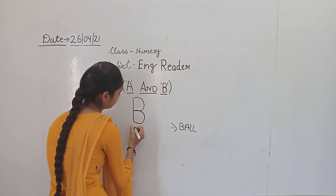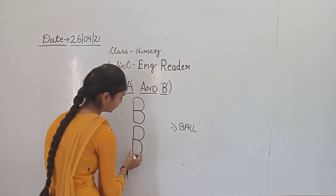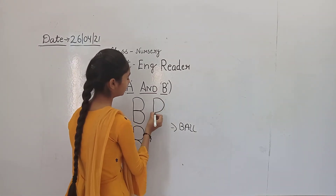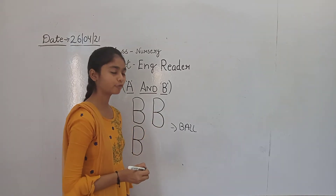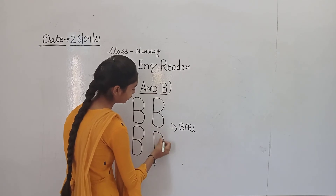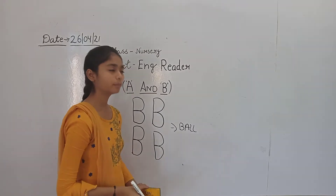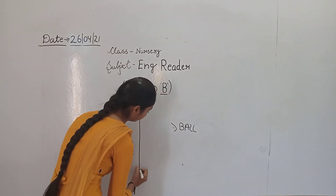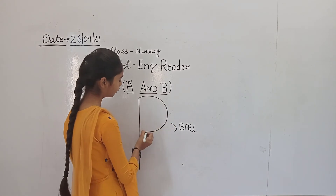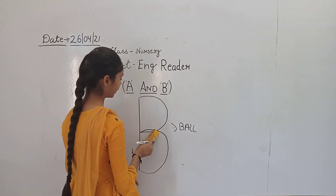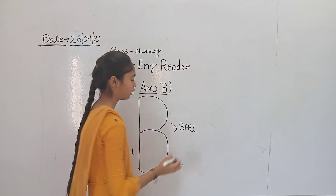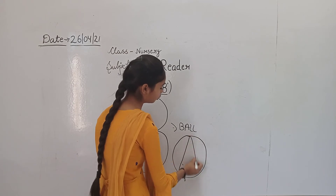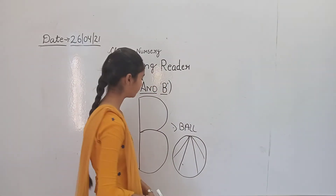Standing line, curve, again curve. B for ball. Standing line, curve, again curve. B for ball. Repeat it again. This is our standing line. Then curve has turned into a curve. Again — curve has turned into a curve. B for ball. B for ball. It is our B. B for ball.